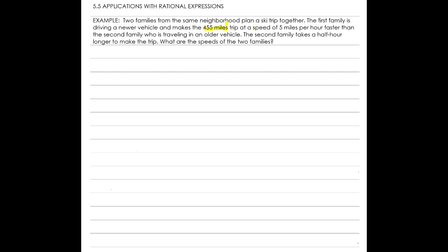There's a lot of information in this problem we don't care about. We don't care that they're from the same neighborhood or that they're going on a ski trip together. We don't even care if one vehicle is newer than the other — that has no bearing on solving what speeds they were traveling at. Here's what's important: the distance they drove — 455 miles — the fact that one speed was 5 miles per hour faster than the other, and that one family took a half an hour longer. The rest is irrelevant.